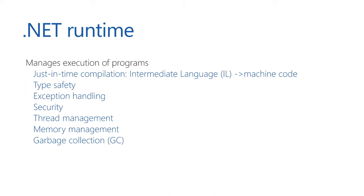The garbage collector is part of the .NET runtime, which manages the execution of programs. Whenever we write a program, we host it in the .NET runtime, which compiles it for us — we compile to intermediate language, and the runtime compiles that to machine code at runtime and executes it. It manages type safety, handles exceptions, looks at security, handles threads, and manages memory for us through a garbage collector.